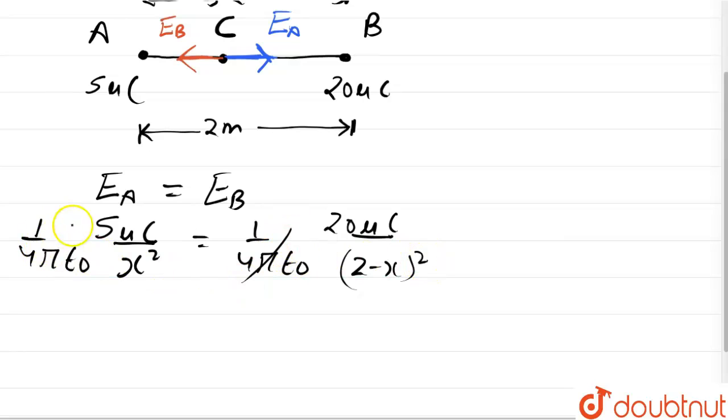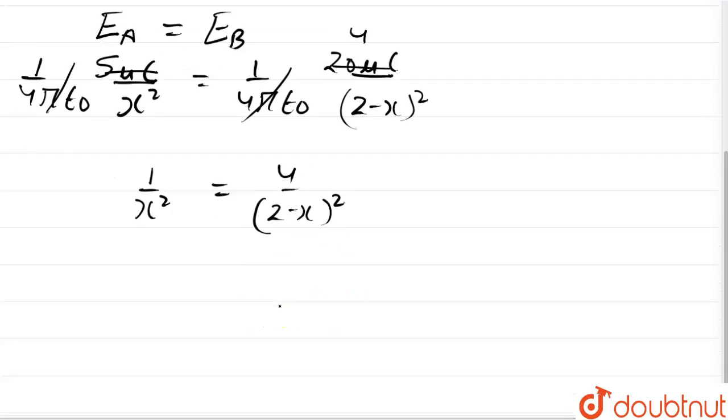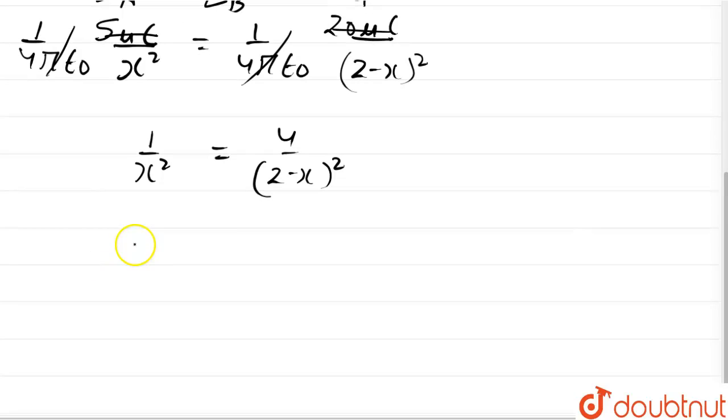This term will get cancelled out and this will also get cancelled as 4 and we get 1 upon x square is equal to 4 upon 2 minus x whole square. Now taking square root on both sides we get 1 upon x is equal to 2 upon 2 minus x.